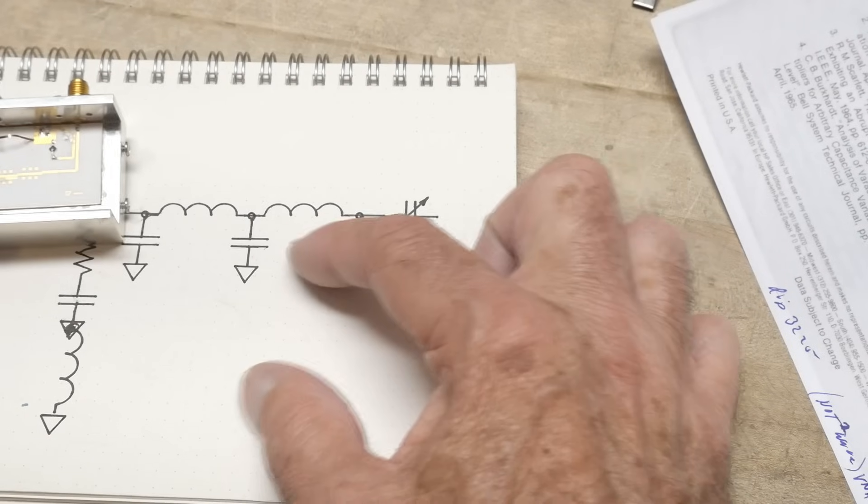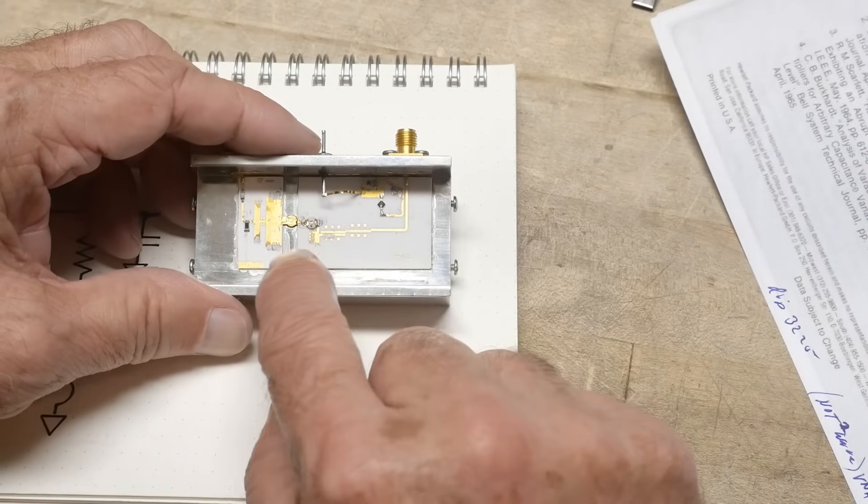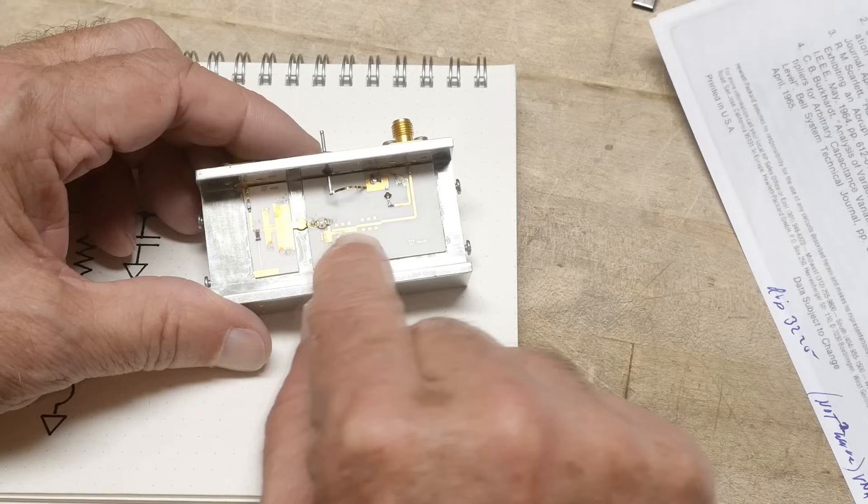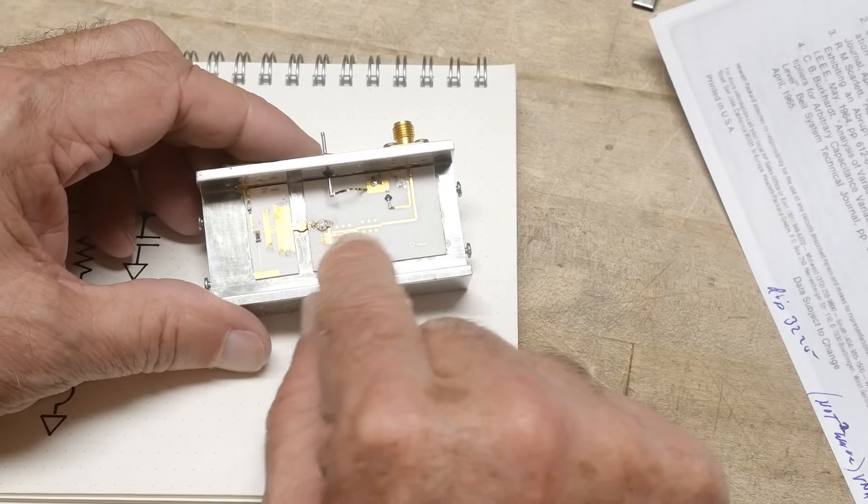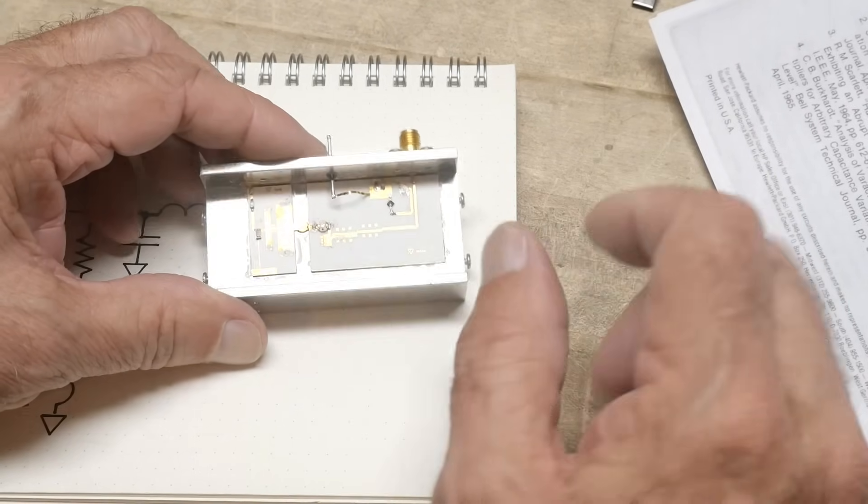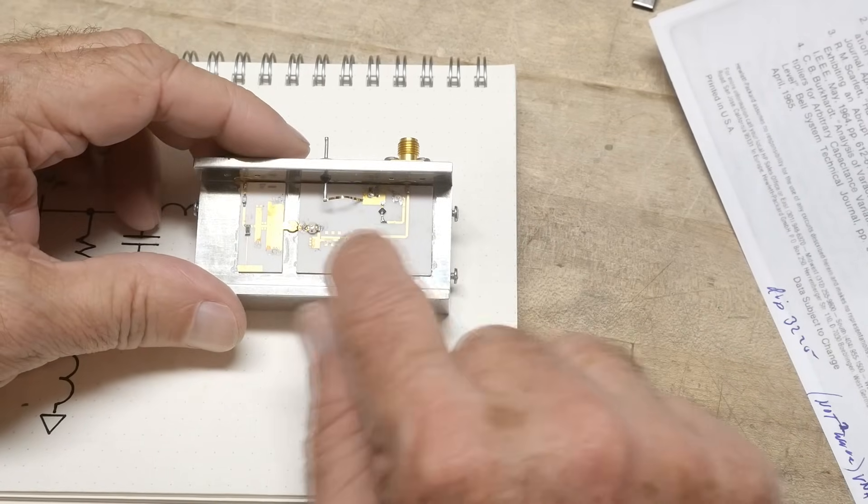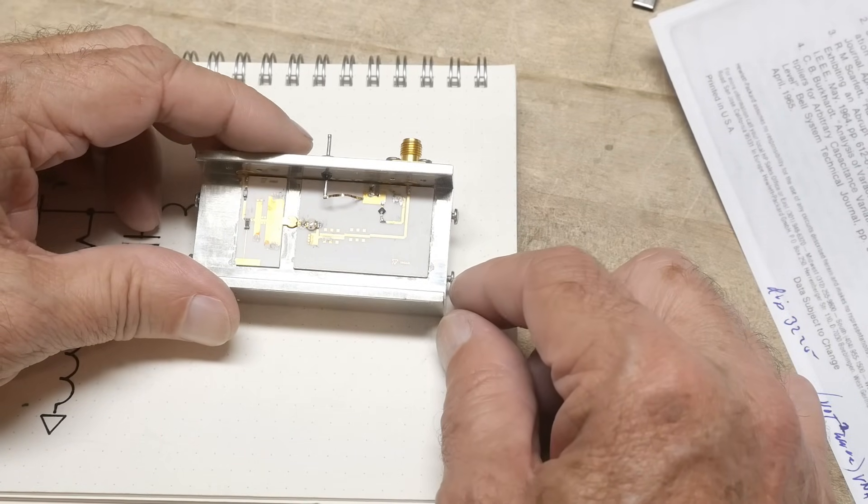And that's what's kind of going on here. There'll be a certain impedance for the length of these sections in the bandpass filter and it'll resonate at a particular frequency. And that allows the bandpass filter to work that way.